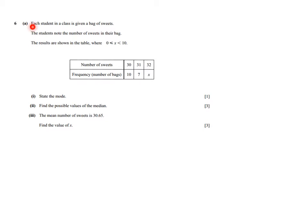It says each student in a class is given a bag of sweets. The students count the number of sweets in their bag, and the results are shown in the table where X is greater than or equal to zero but less than 10. The table shows the number of sweets: 30, 31, 32, and the frequency — 10 bags with 30 sweets, 7 bags with 31, and X bags with 32 sweets. Let's underline that constraint because it's going to be important.